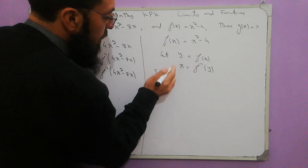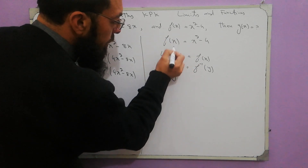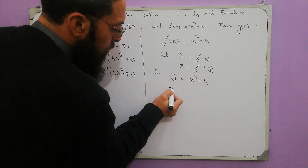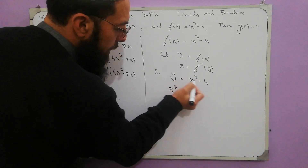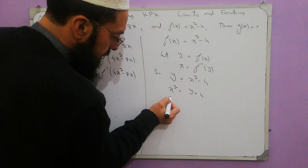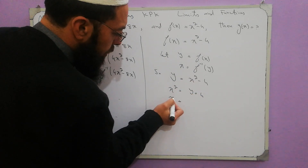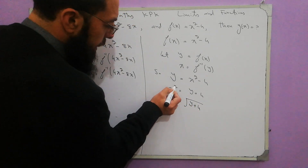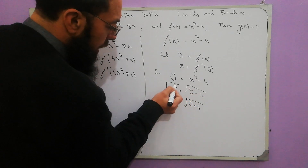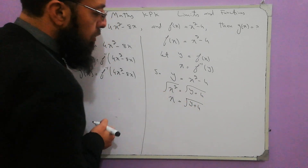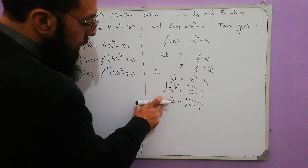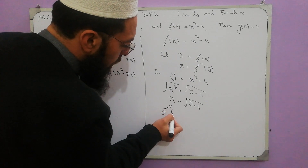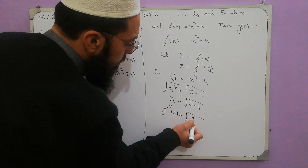y is equal to f of x, so I can put y here: y is equal to x squared minus 4. Find x in terms of y: x squared is equal to y plus 4. To find x, take the square root of both sides, so x is equal to the square root of y plus 4. Under root of x squared is x, so x is equal to f-inverse of y. Therefore, f-inverse of y is equal to the square root of y plus 4.